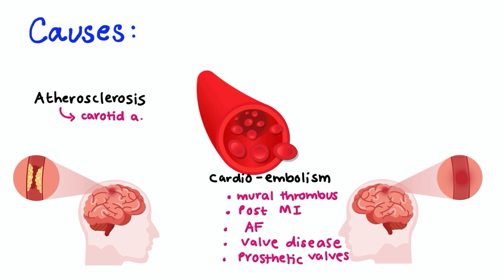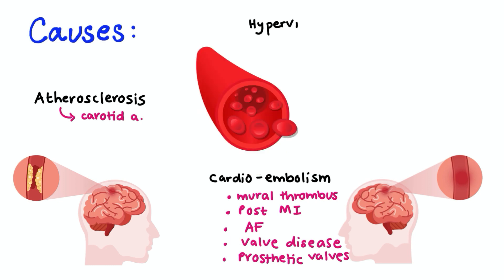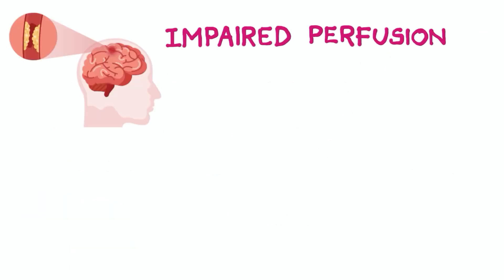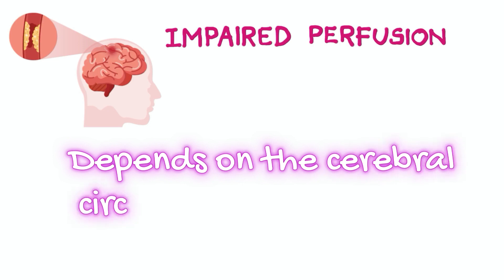For hematological disorders, patients might have polycythemia and sickle cell disease. Vasculitic causes like polyarteritis nodosa, cranial arteritis and syphilis can also cause TIA. The problem occurs when there's an emboli or plaque in the carotid artery that eventually leads to impaired perfusion of the brain tissue. The focal neurological symptoms produced by this ischemia will depend on the area of cerebral circulation involved.